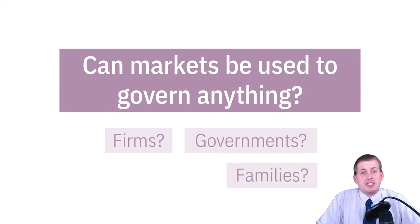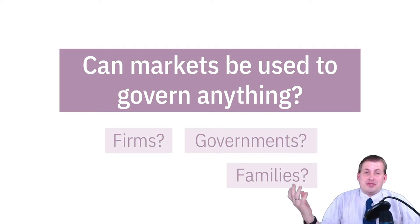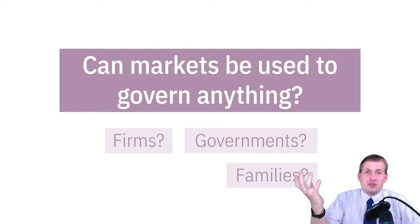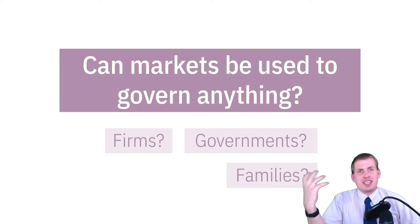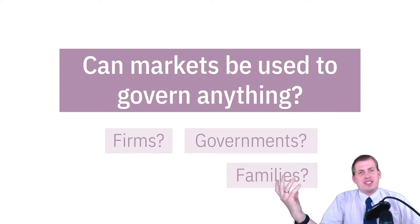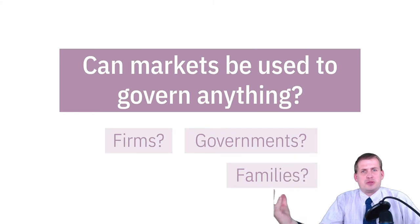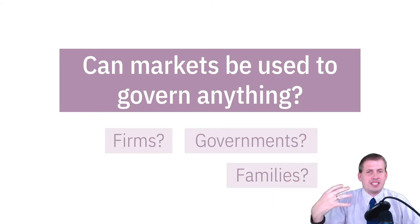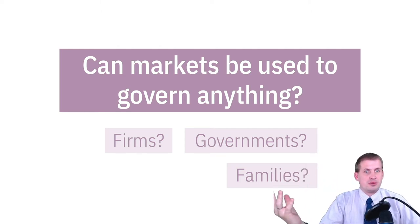You could arguably govern a family this way — have children produce stuff and if they don't perform well, move them to a different family. That's ludicrous, but I know of families with family mission statements and annual performance reviews with their parents. Their parents are both MBAs, so they've marketized the whole family structure, which is really bizarre.